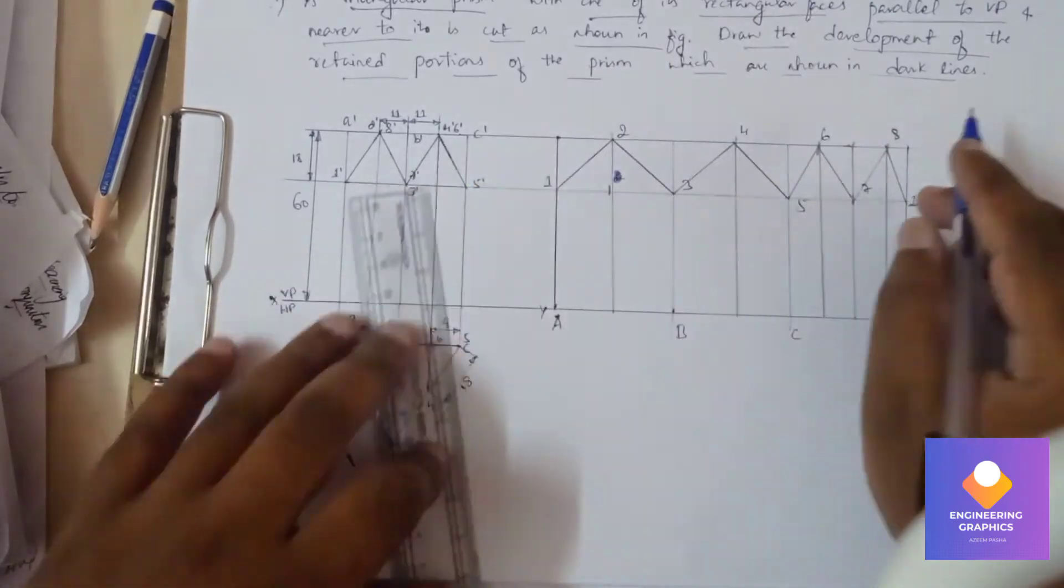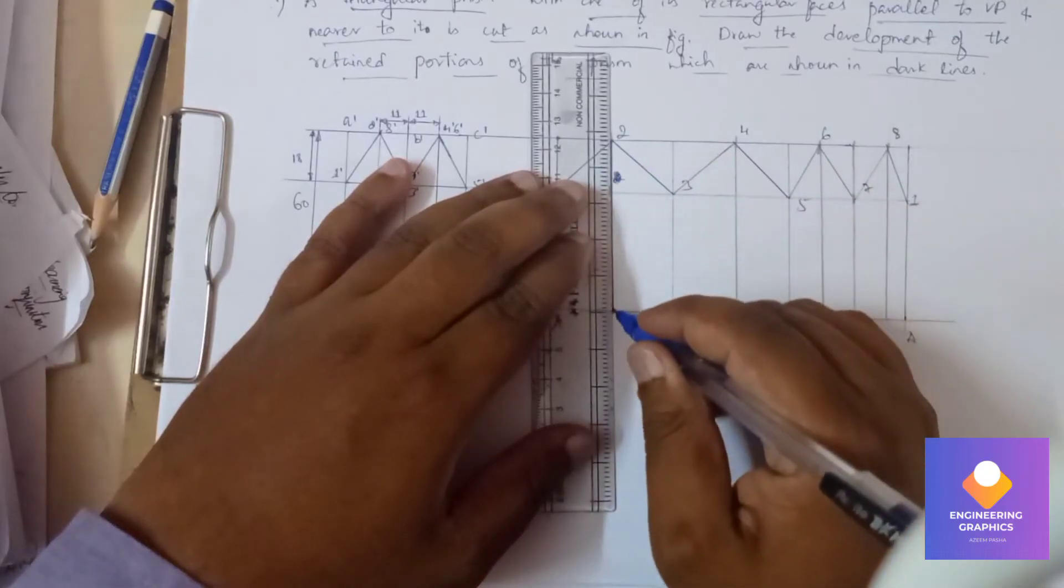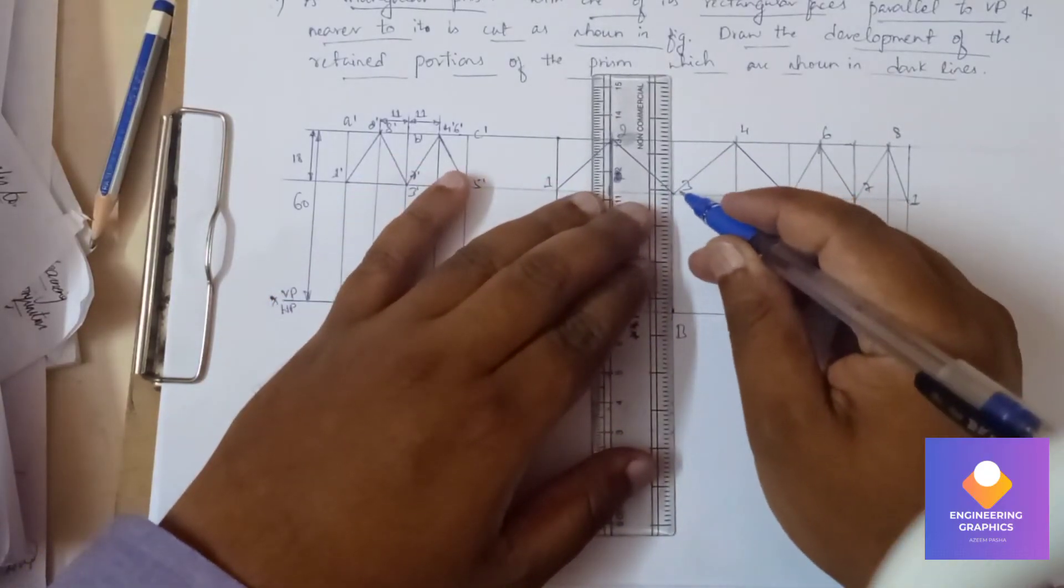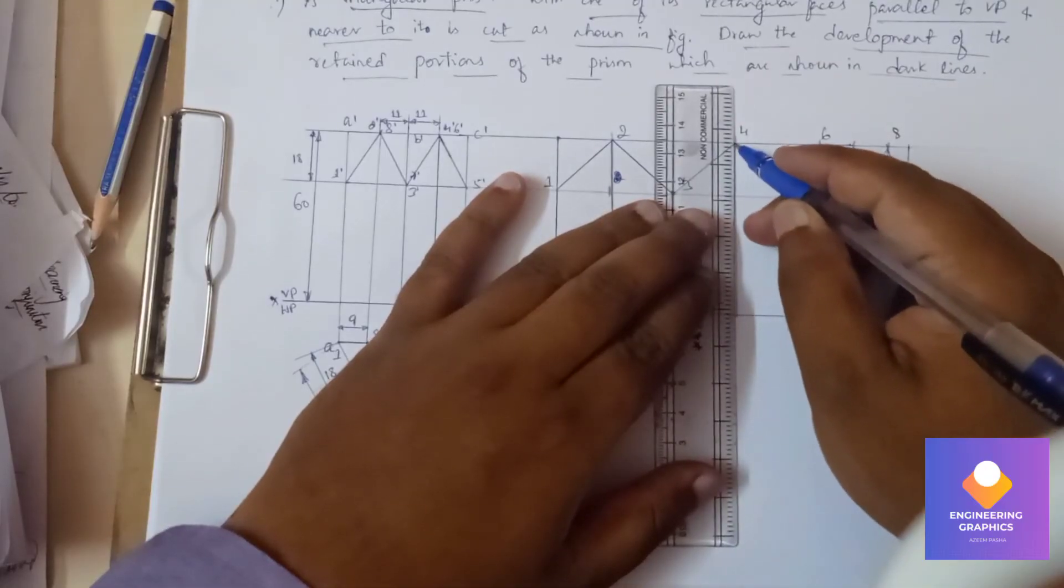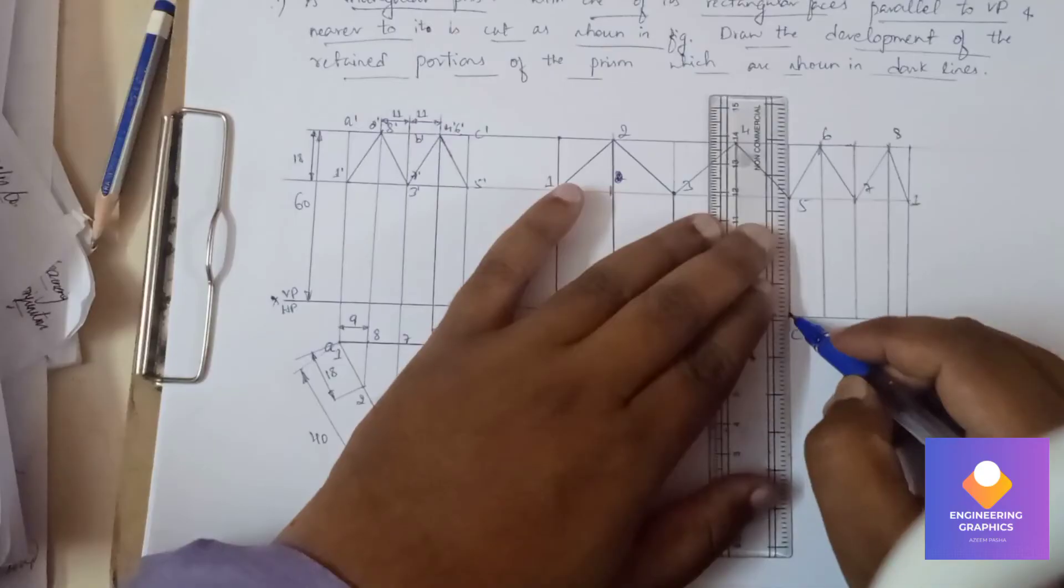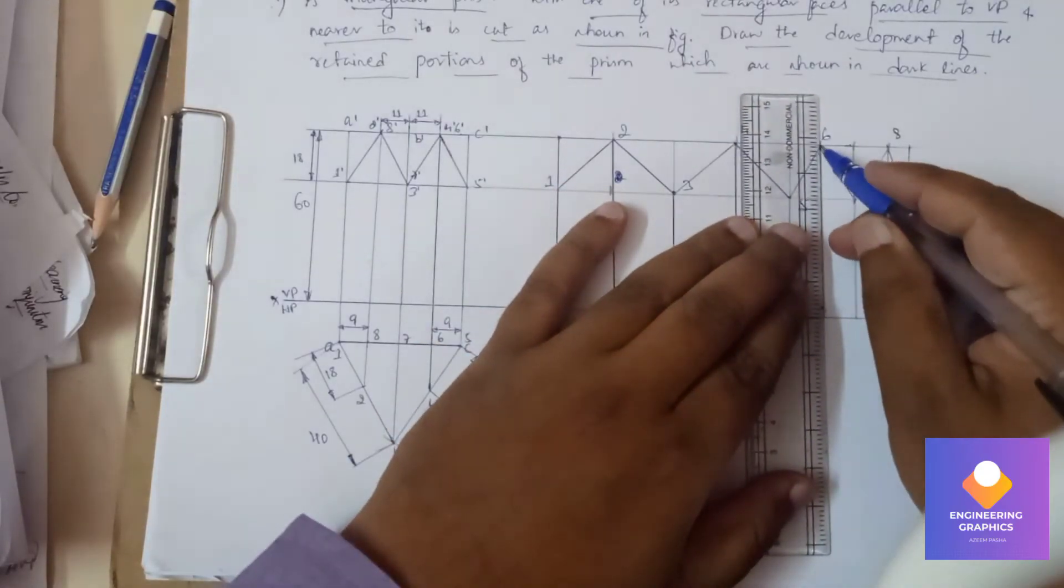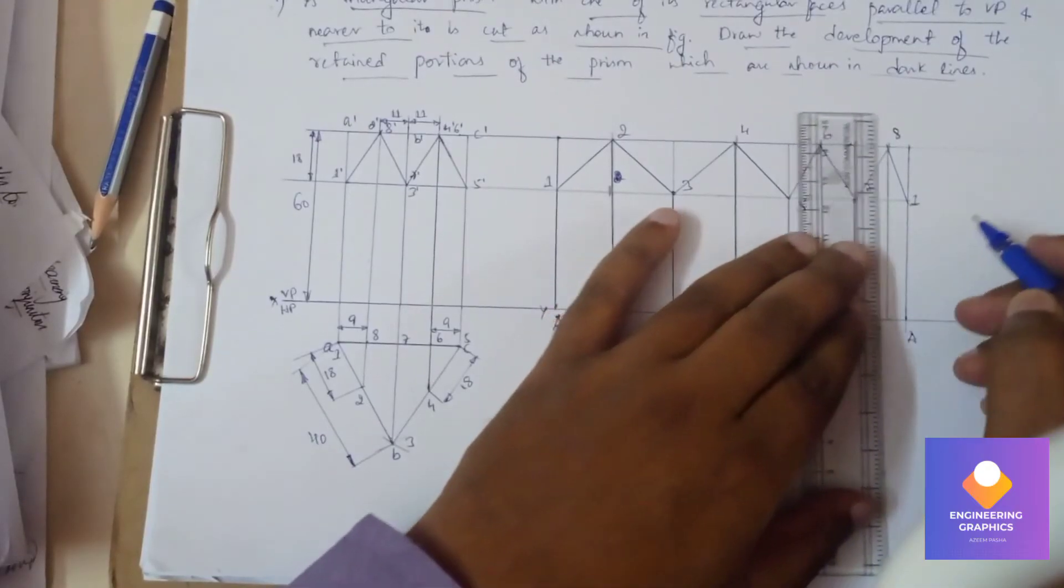Okay, and we need to dark this wherever the numbers we have written. So from there we will be darking it. So that's what the retained portion of this triangular prism. We should dark those vertical lines where we have mentioned these numbers.